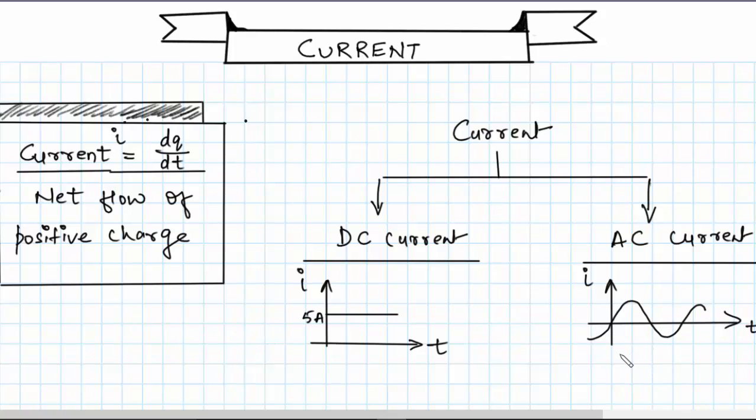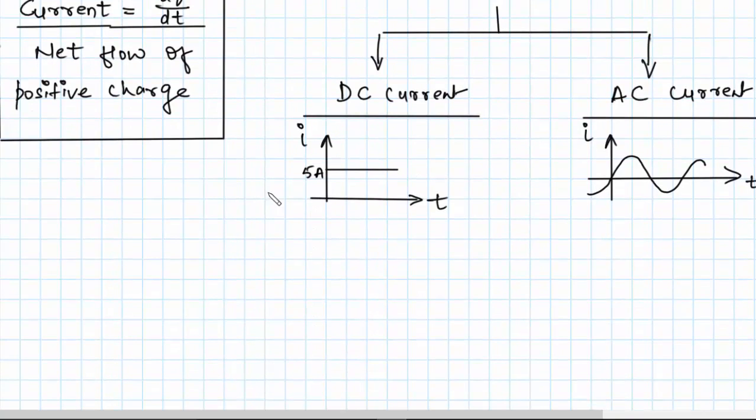So this is the major difference between two types of current. When current is constant with time we will say this is DC current, and when current is varying with time we will say that this is AC current. So DC current remains constant.